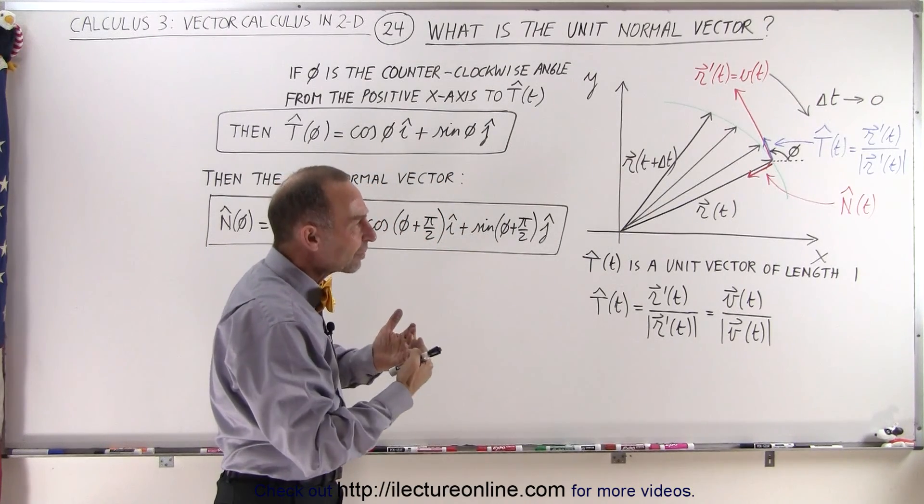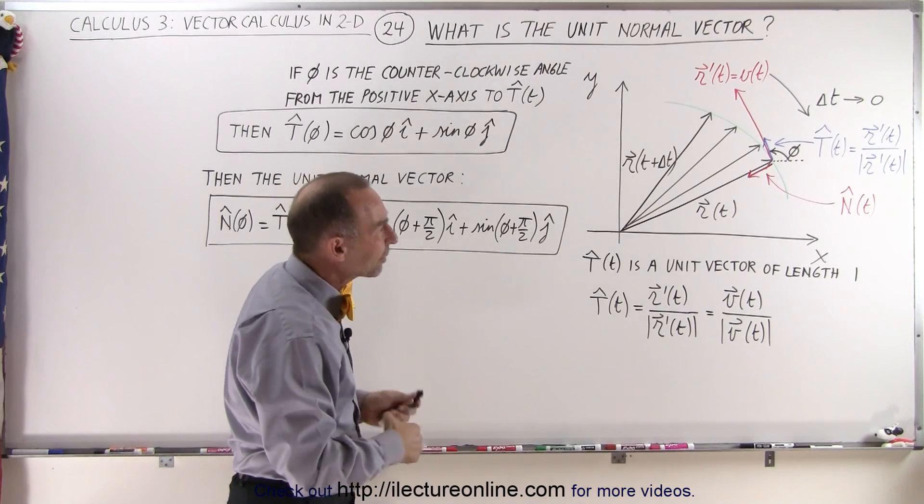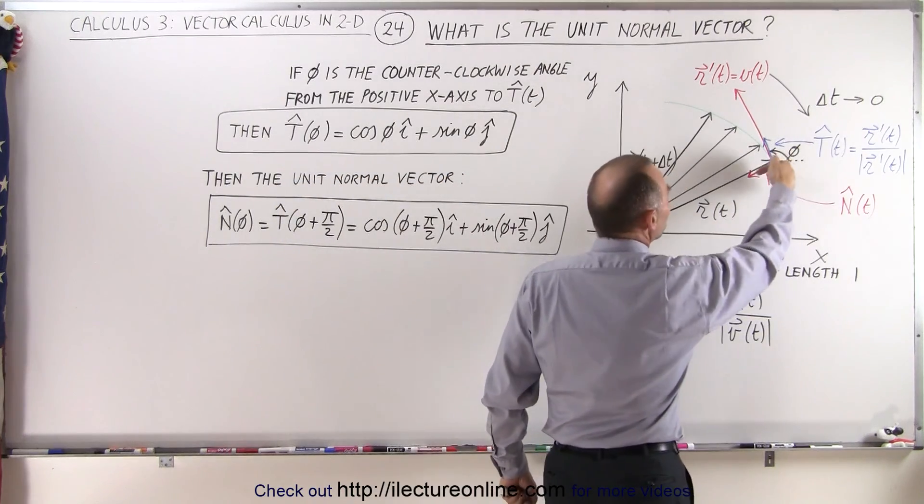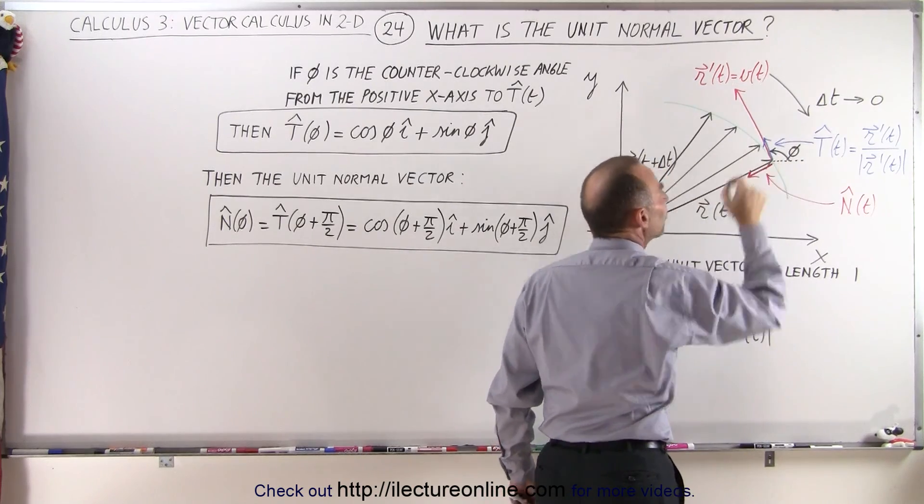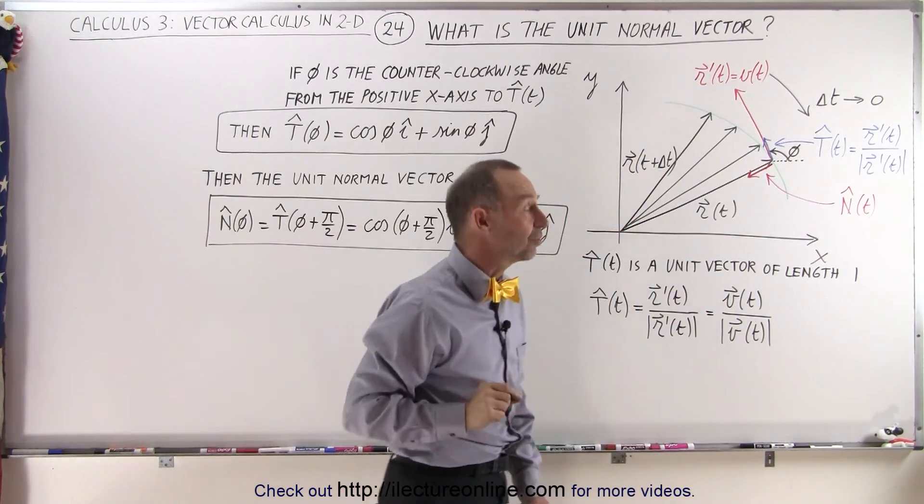So what is the normal vector, or the unit normal vector? Well, it is a vector perpendicular to the tangent vector pointing back to the origin from the location of the particle at time equals t.